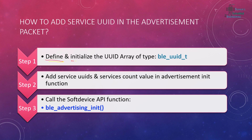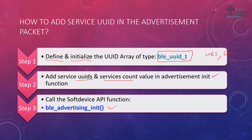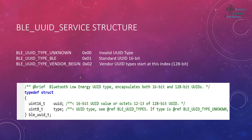To add a service UUID to the advertisement packet, first define and initialize a UUID array of type BLE_UUID_T. Add your UUIDs — for example, HRS, DIS, etc. Then add the service UUIDs and the service count value into the advertisement init structure, and finally call the BLE advertisement initialization function.